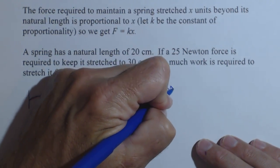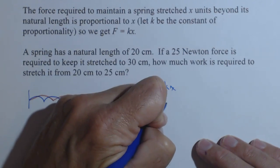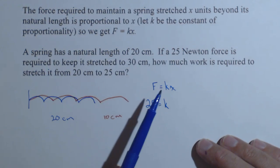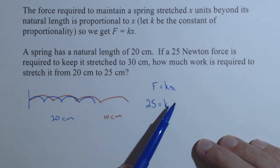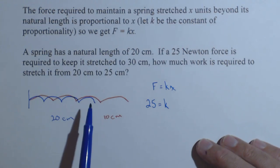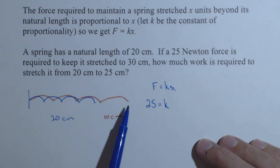We know F = kx, and we're told that a 25 newton force is required to stretch it to 30 centimeters. Now, this is where the distance it's being stretched needs to be put in. But notice, x is the number of units beyond its natural length. 20 centimeters is its natural length. We've only stretched it out an additional 10 centimeters.